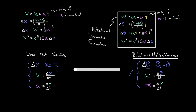You use these the exact same way you used the regular kinematic formulas. You identify the variables that you know, identify the variable you want to find, and use one of the formulas that lets you solve for that unknown. Let me show you some examples, because it takes a while before you get the swing of them.